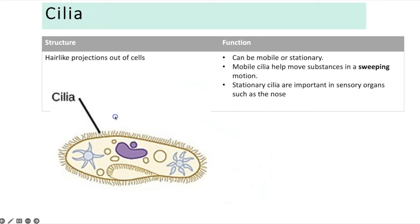Cilia are hair-like projections found on some cells and can be mobile or stationary. Mobile cilia help move substances in a sweeping motion — for example, cells lining the trachea have mobile cilia to sweep mucus up and out, preventing lung infection. Stationary cilia are important in sensory organs such as the nose.